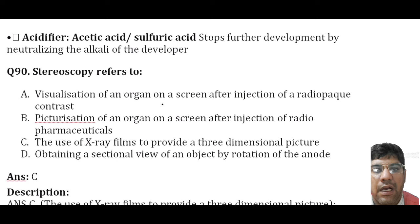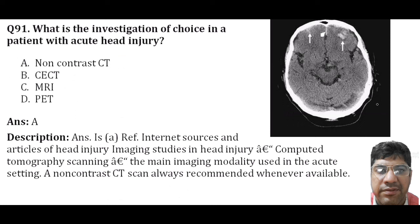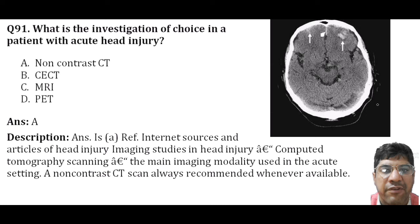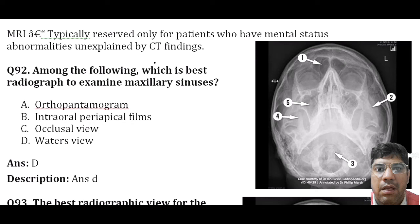Which investigation is the choice for a patient with a head injury? The answer is non-contrast CT. This imaging modality is commonly used in the acute setting to assess head injuries, providing detailed assessment of brain structures in most emergency departments. It can quickly identify intracranial hemorrhage, fractures, and traumatic brain injuries.